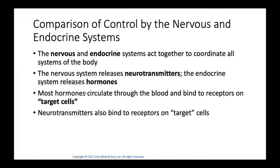Remember, homeostasis is a dynamic state of change going on in the body. It's not like your blood pressure is always 120 over 80 — sometimes it needs to go higher. Your heart rate isn't always 72 beats per minute; it could be 150 beats per minute if you're running or doing high intensity exercise training. The two systems that regulate and control homeostasis in the body are the neural system and the endocrine system.